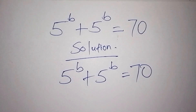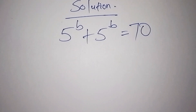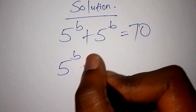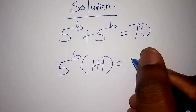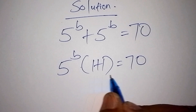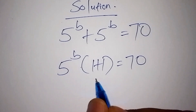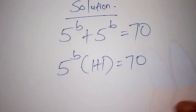This is the best approach. The first step is to factorize 5 to the power of b plus 5 to the power of b. This can also be written as 5 to the power of b into bracket 1 plus 1, is equals to 70. When we expand the bracket by 5 to the power of b, we are left with 5 to the power of b plus 5 to the power of b.